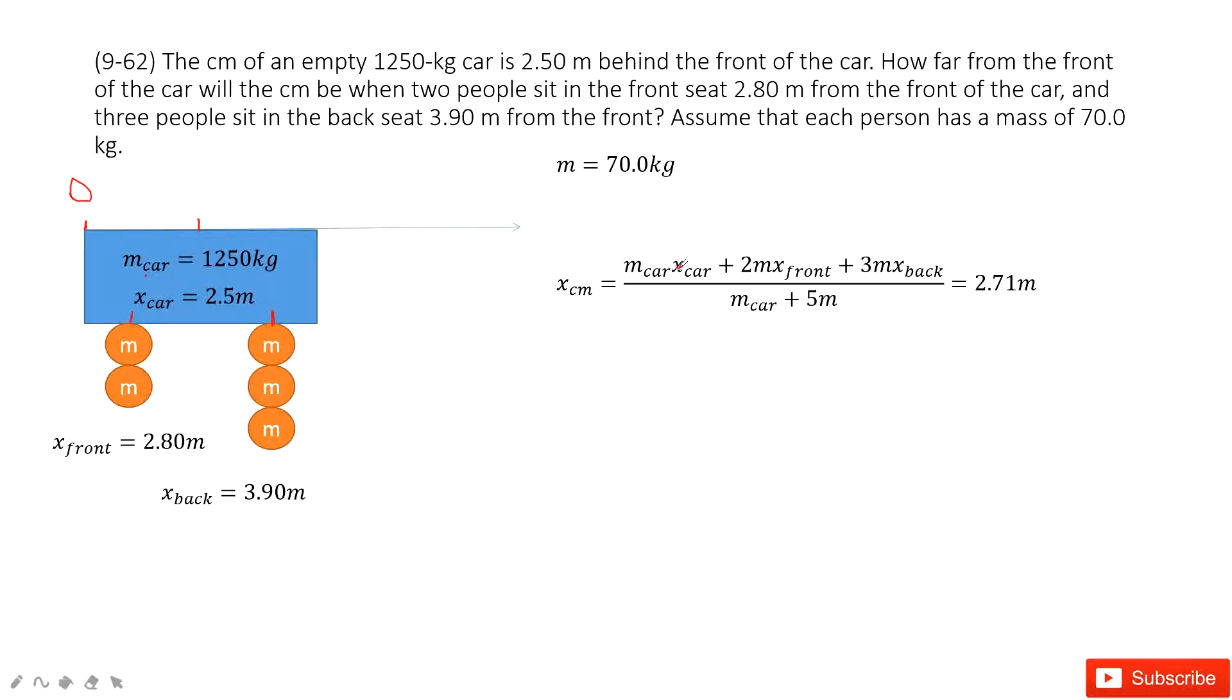So car, mass of car times x car plus the 2 people in front. So 2m, the mass of person is given. So 2 people, this is the mass, 2m times x front plus 3 people in the back, times x back.